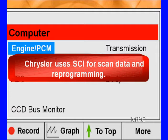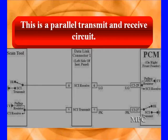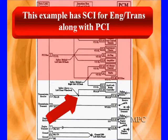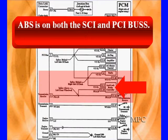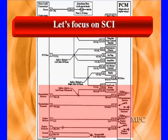Chrysler uses SCI for scan data and reprogramming and for interfacing with the transmission. Parallel means two wires — a transmit and receive circuit. This is an example of SCI for engine transmission along with PCI in the shaded area. The unshaded bottom part shows the grounds and the SCI transmit and receive. Some things, like ABS, reside on both the SCI and the PCI bus. We're going to focus right now just on SCI.